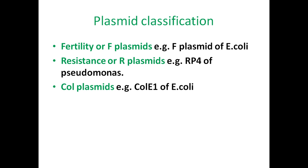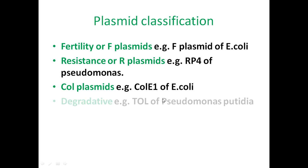The third type is col plasmids, an example being the col plasmid of E. coli. These plasmids carry genes producing colicins, which will kill other bacteria. Next are degradative plasmids, which confer to the host cell the ability to degrade unusual compounds that are otherwise non-degradable. Examples include toluene and salicylic acid, with the TOL plasmid from Pseudomonas putida as an example.